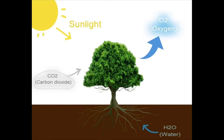For example, trees provide us with oxygen to breathe. Trees also take in carbon dioxide through their leaves. Carbon dioxide is a greenhouse gas, meaning that if too much of it builds up in Earth's atmosphere, our planet will heat up. Therefore, trees help to manage Earth's climate and keep it livable for us. Tree roots help to fight soil erosion and flooding by holding the soil together and absorbing water from the soil.